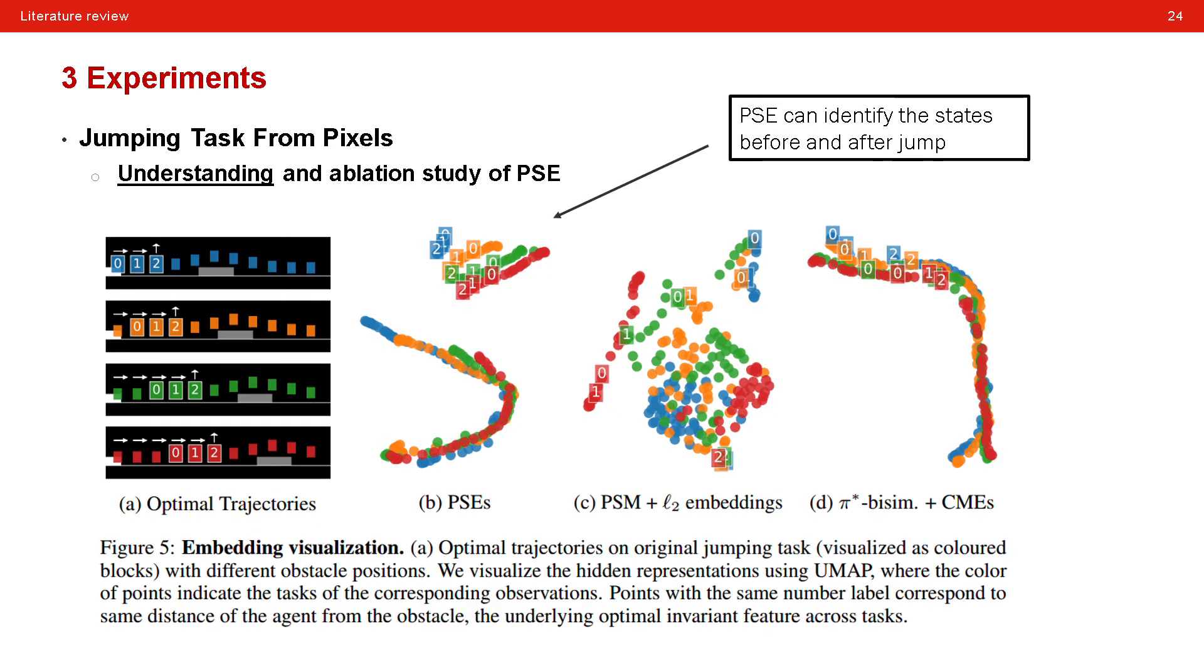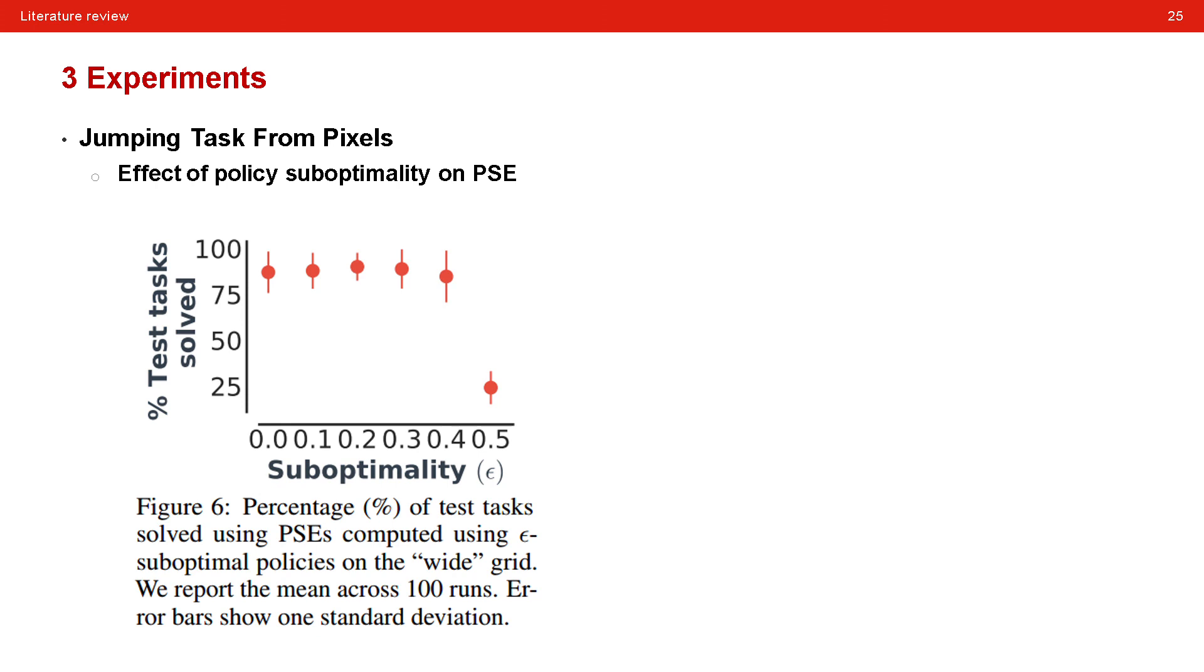Since this paper managed to exploit similar state embedding to generalize policy in different state space, the authors further visualized the state embedding learned from the proposed method. You can see there, embedding can indicate some nature of the states. For example, the state before and after jump are distinguished in the latent space here. And they also test the sensitivity of their method by generalizing suboptimal policies in the test task. Epsilon here indicates the probability to conduct suboptimal actions. The larger epsilon indicates the worse policy to transfer. As in this figure, the proposed method can be robust to the suboptimality of the transfer process to some extent.